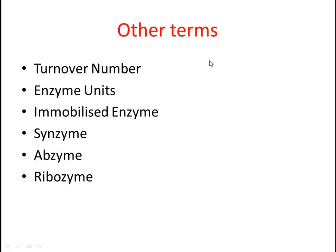There are some other important terms in enzymology. First, the turnover number — it is the micromoles of substrate converted into product per mole of enzyme. The second term is enzyme units. Enzyme units are the micromoles of substrate converted into product per minute per ml of enzyme, usually indicated by capital U.